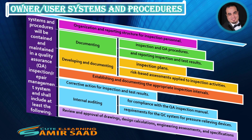Systems and procedures will be contained and maintained in a Quality Assurance (QA) Inspection Repair Management System and shall include at least the following: Organization and Reporting Structure for Inspection Personnel; Documenting Inspection and QA Procedures and Reporting Inspection and Test Results; Developing and Documenting Inspection Plans; Risk-Based Assessments Applied to Inspection Activities; Establishing and Documenting the Appropriate Inspection Intervals; Corrective Action for Inspection and Test Results; Internal Auditing for Compliance with the QA Inspection Manual.